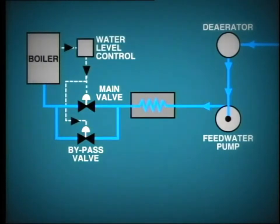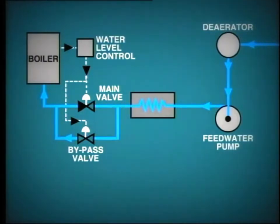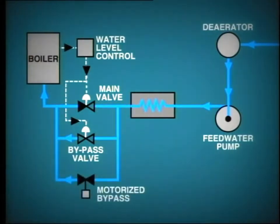During startup and at low load, the small control valve is operated. Eventually, as load increases, this valve approaches the full open position and the large valve takes over the operation. A further bypass may be fitted around both of these valves for use in case of failure of the boiler control system or valve actuators.